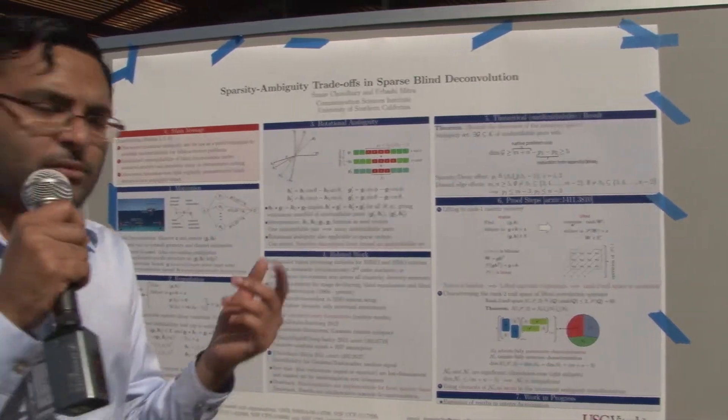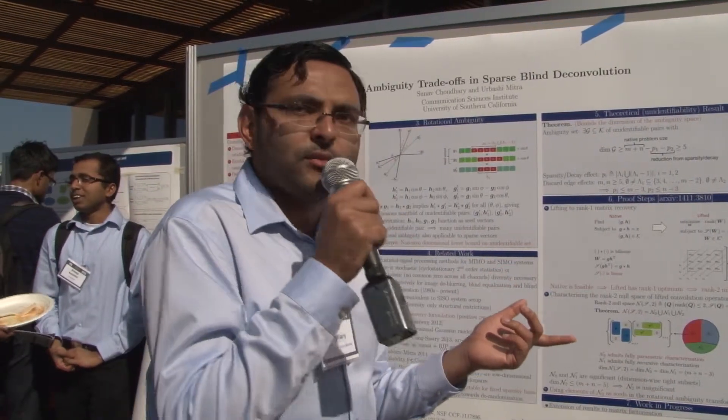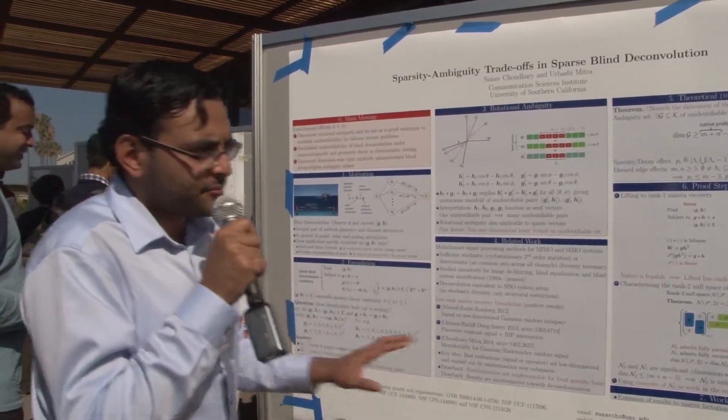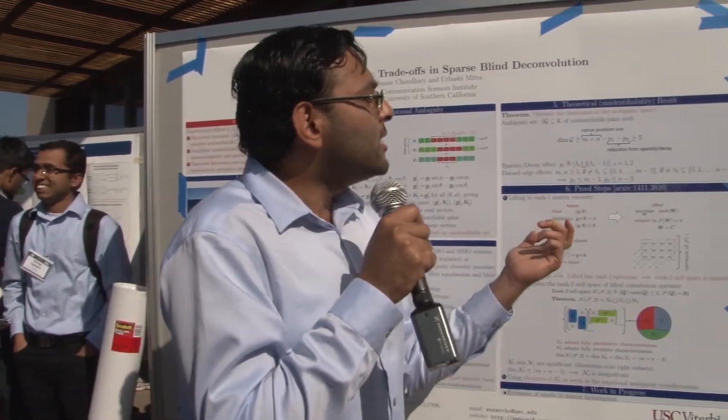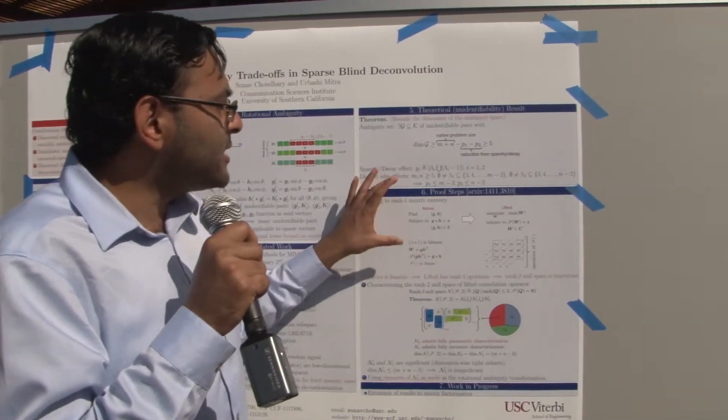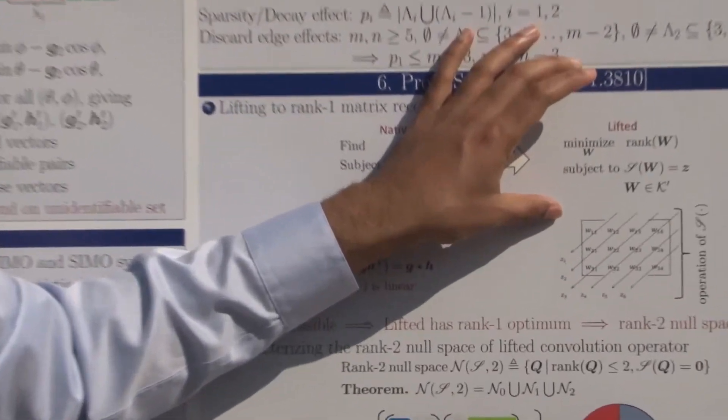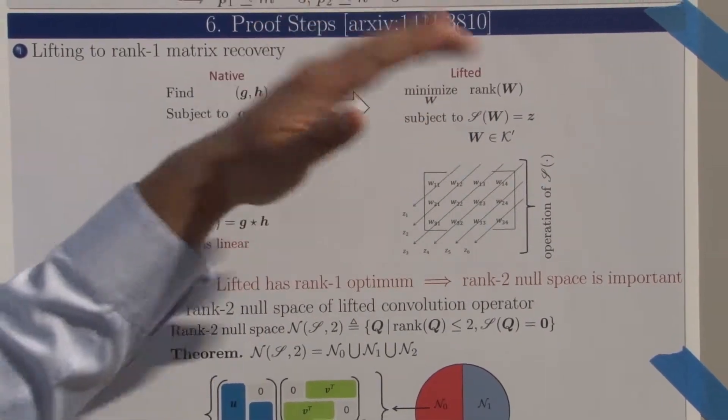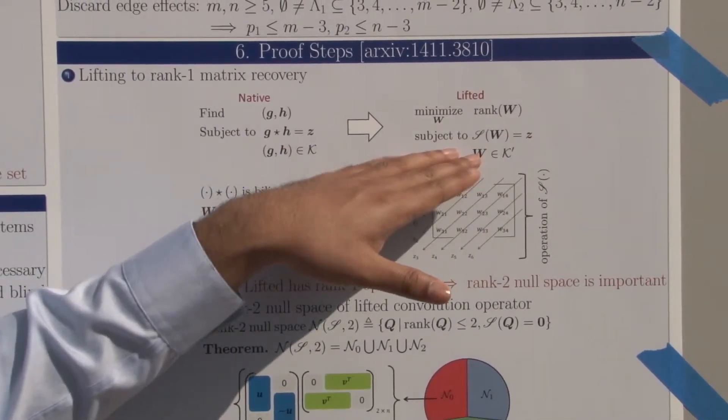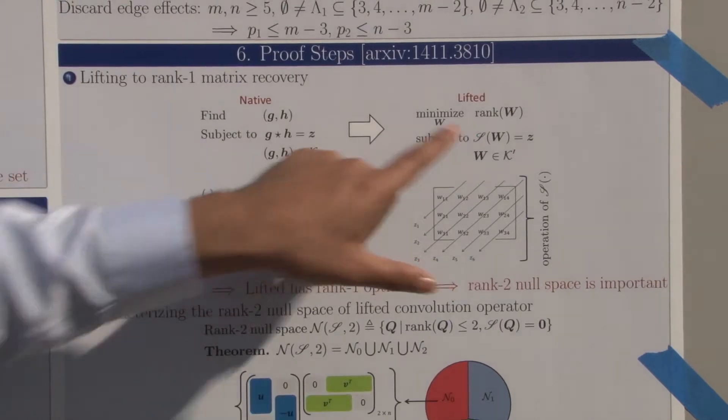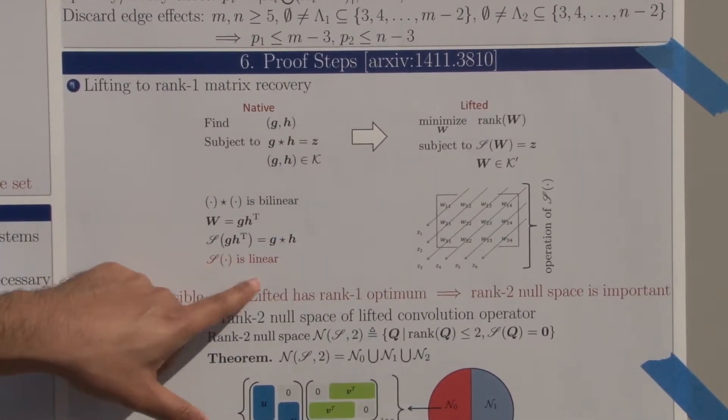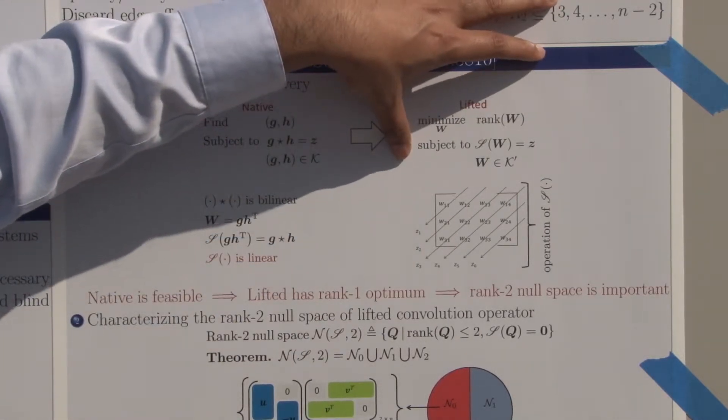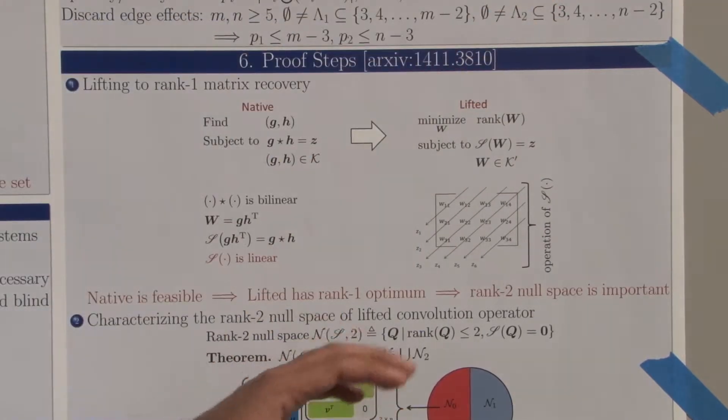One of the key technical challenges in this setting was to analyze this problem because this constraint is nonlinear. How do you deal with this? First, take this native problem and transform it to a matrix recovery problem, which is minimizing the rank of a matrix subject to some linear constraints. This operator S—script S—is linear. This is very nice because now you can do linear algebra on this problem to analyze it.